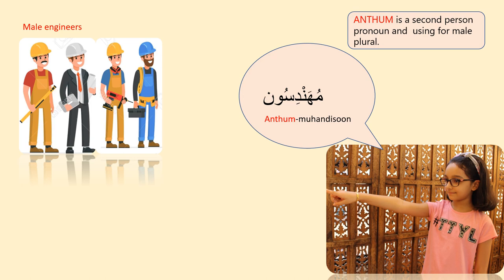Here, many engineers are standing near me and I want to say 'you are engineers.' In English there is only one second person pronoun 'you,' whether talking to one, two, or more people. But in Arabic there are masculine and feminine versions. Since we are addressing more than two male people, we use Antum. 'Antum Mohandisoon.' Antum is the second person pronoun for male plural.